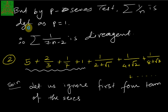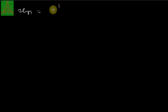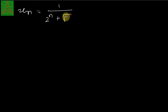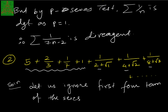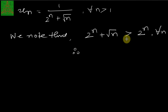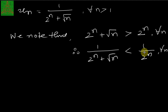Wait — this is actually Example 2 which involves the series 1/(2^n + √n). After ignoring the first four irregular terms, the general term is u_n = 1/(2^n + √n) for n ≥ 1. We note that 2^n + √n > 2^n, so taking the reciprocal: u_n = 1/(2^n + √n) < 1/2^n. Therefore u_n < v_n where v_n = 1/2^n.